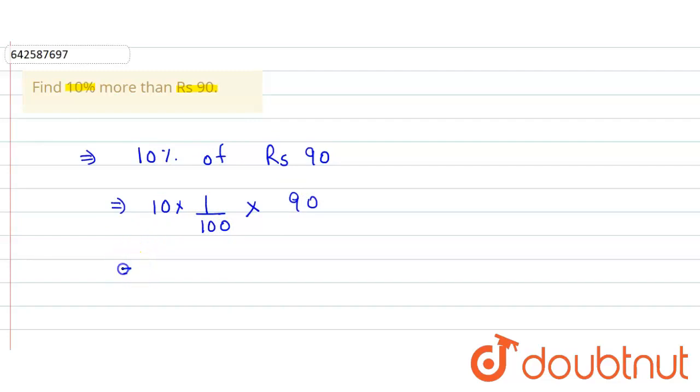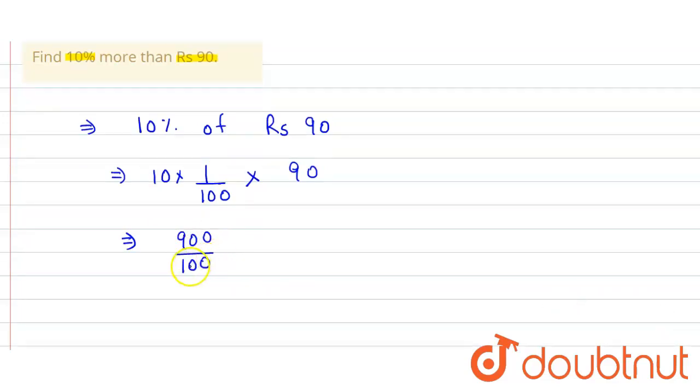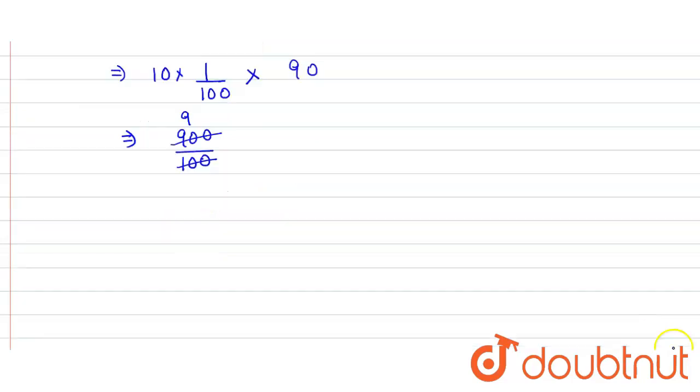So we simply solve it. 10 into 90 will be 900, then divided by 100. When this 100 cancels this 900, we get 9. So that will be equal to 9.